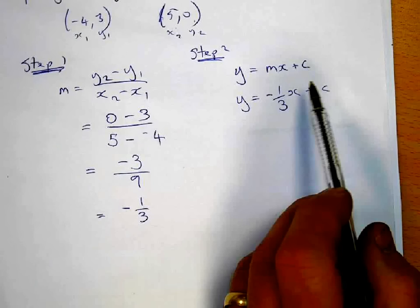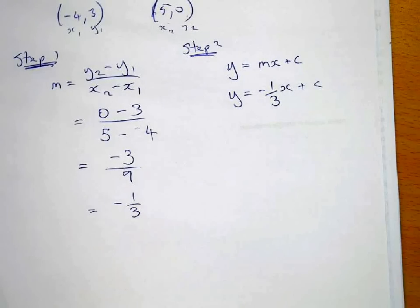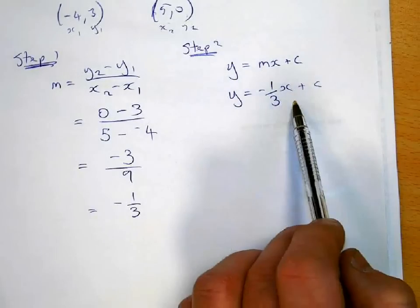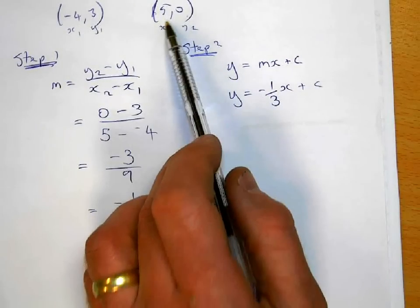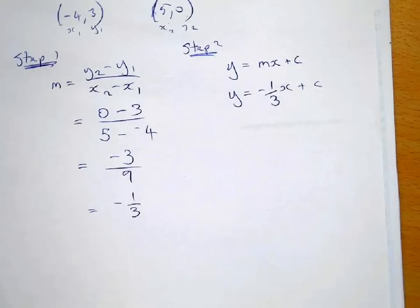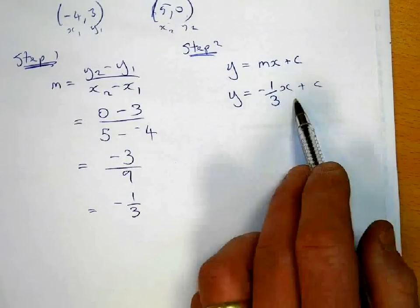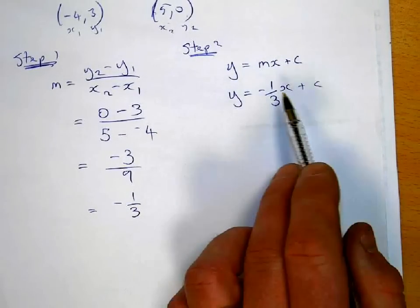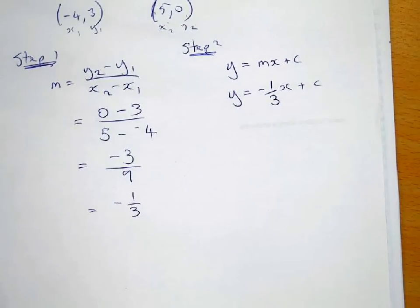Because we want to work out what the value of c is going to be. And if we pick any coordinate, then we can replace the x with one of the values and the y with the other value. And that means we'll be able to work out what c is going to be. Because x and y will be numbers now, and the only one that's not a number is c. So let's try it.